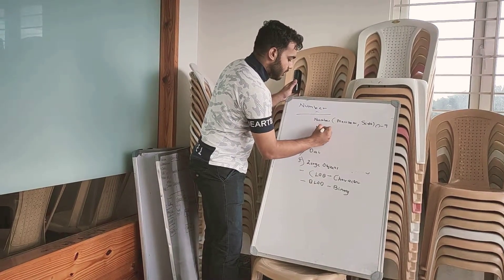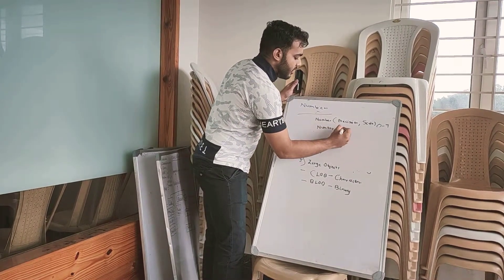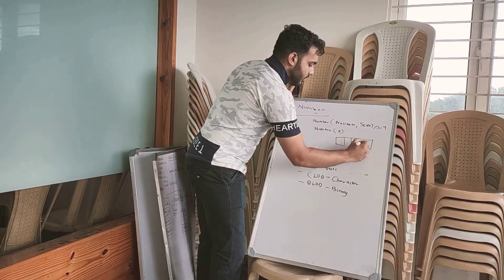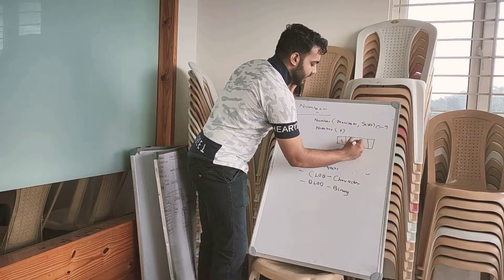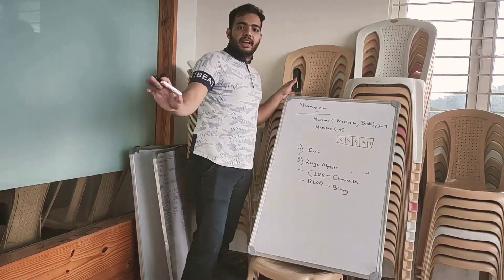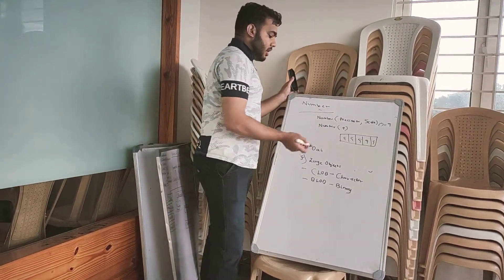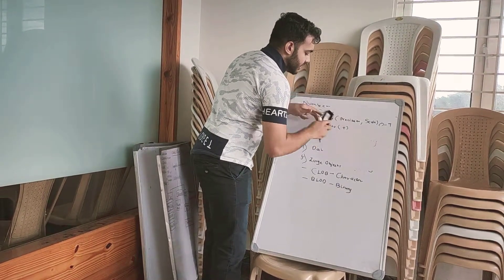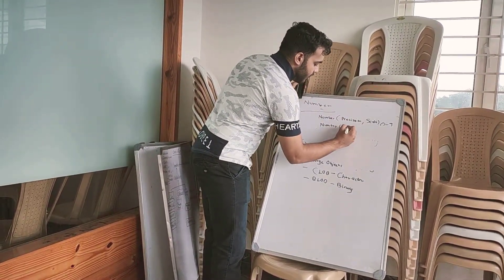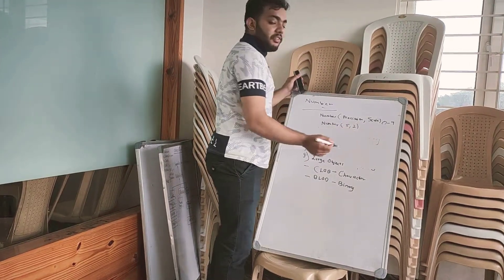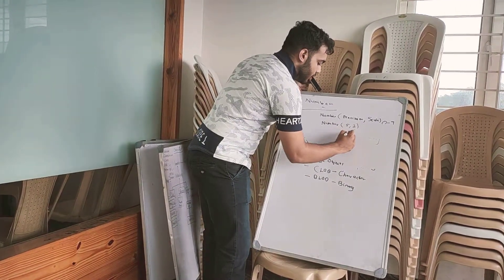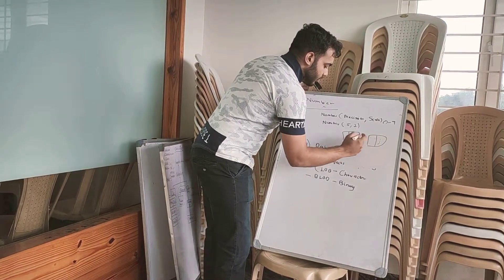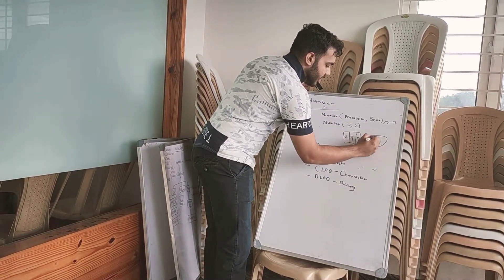If we write NUMBER(5), the highest number of digits will be 5, so the maximum value would be 99999. And if there is a scale, for example NUMBER(5,2), the scale defines the decimal structure. So the data will be like 999.99.